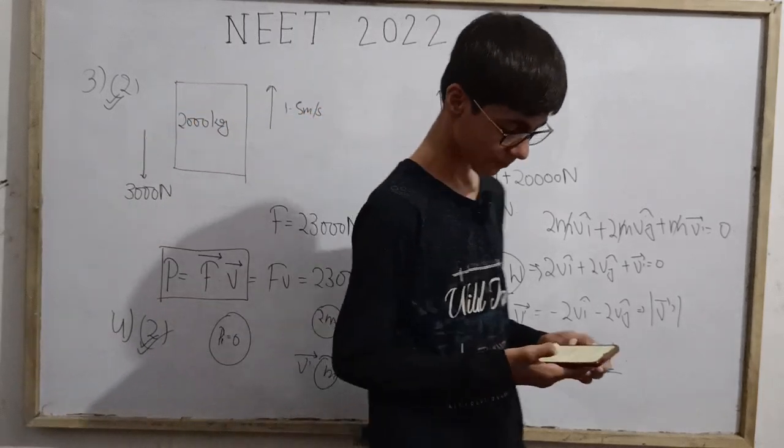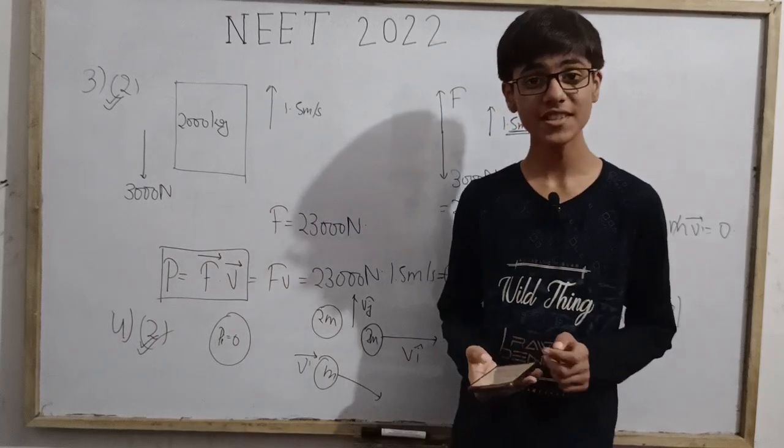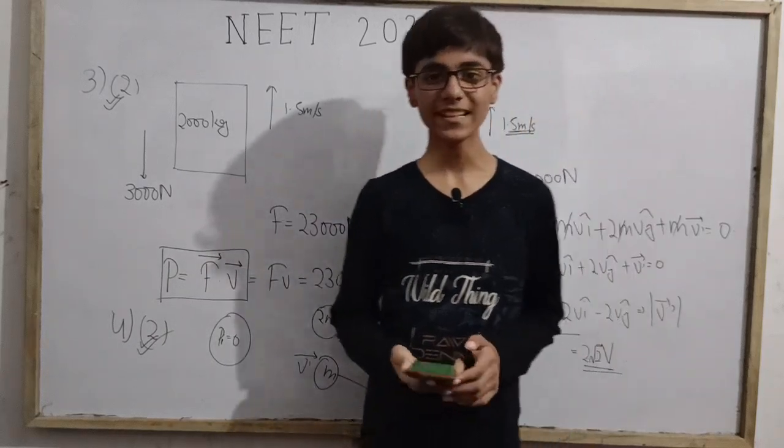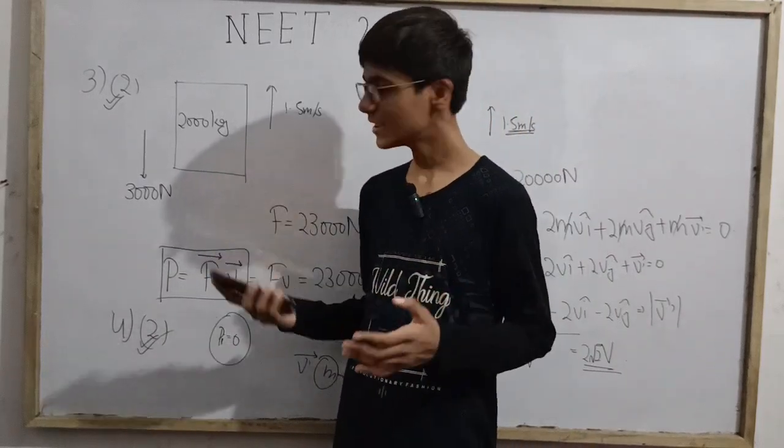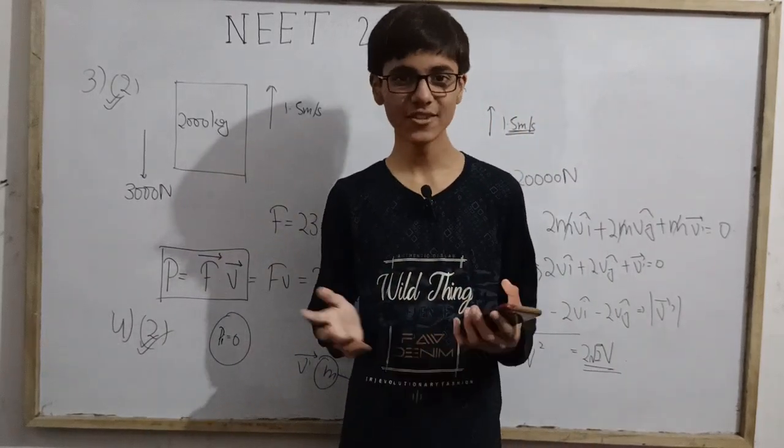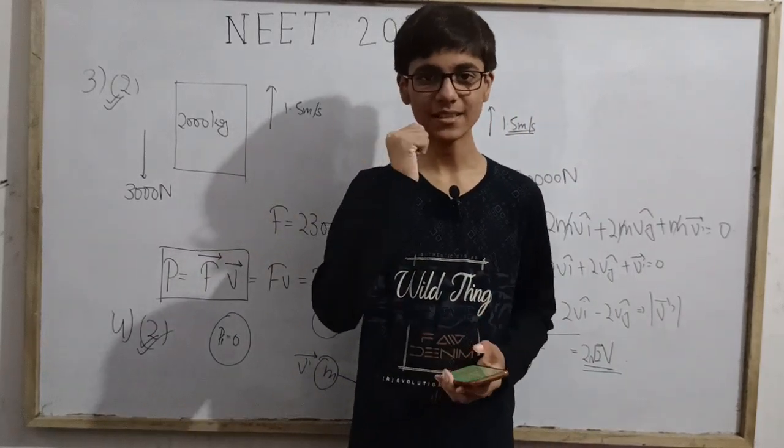The second option, 2√2 v, is the correct answer for question four. We have now solved four questions from this NEET UG 2022 physics paper. There are more questions to follow. Thanks to you all — and that's the end of this session.